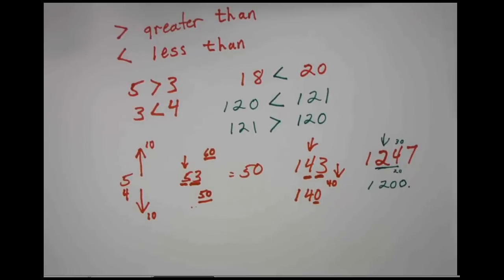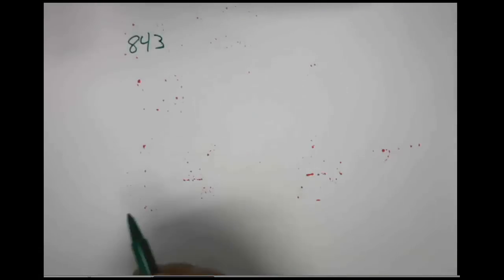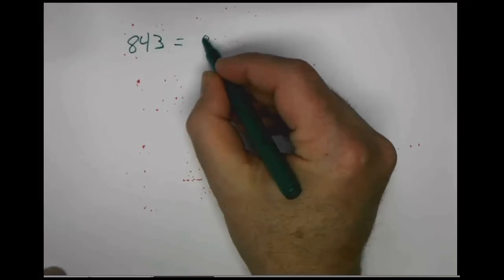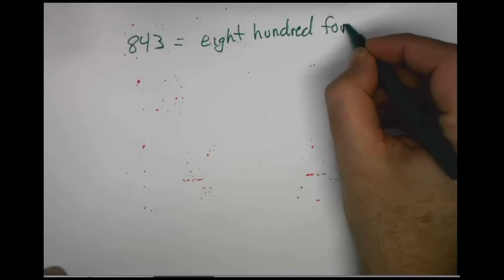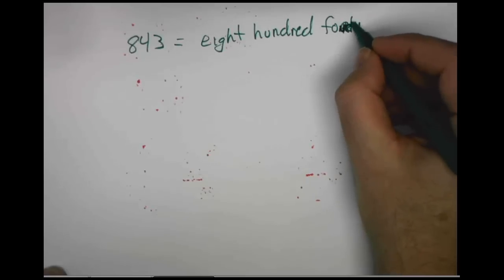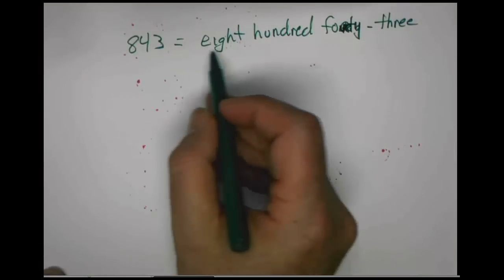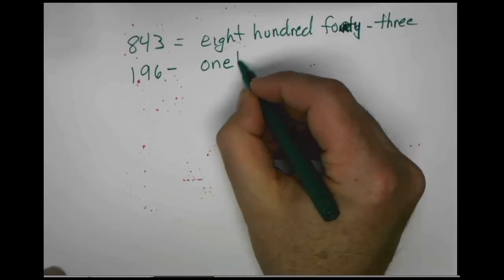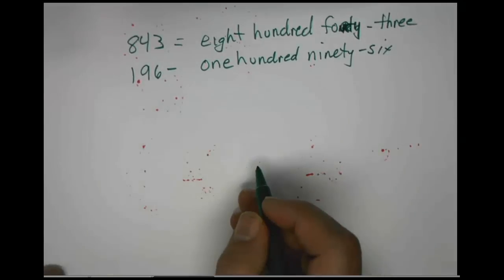Let's take a look at what they're asking you to do as you practice these skills. Problem number 1 is 843. They're asking you to read those numbers, so we would write this out as eight hundred forty-three — just as you would write out a check. Problem number 2 is 196, so we would write one hundred ninety-six. Say the number, write the number.